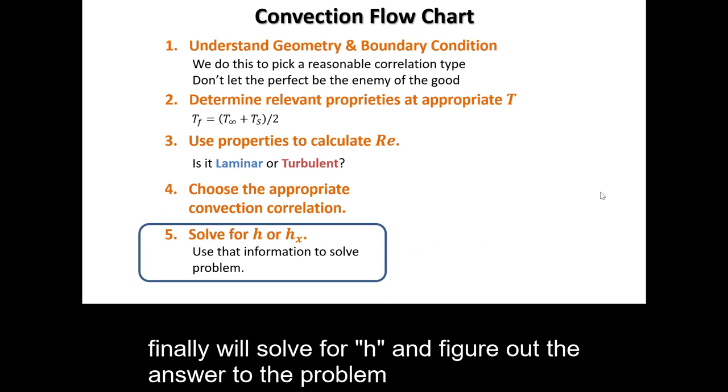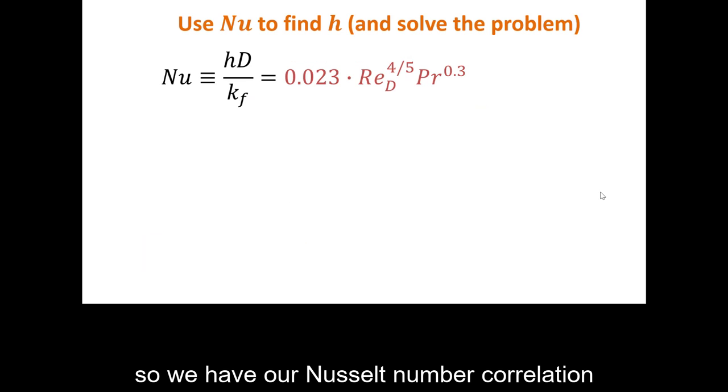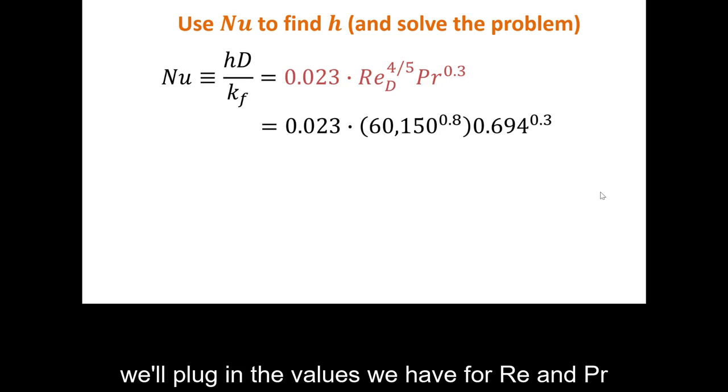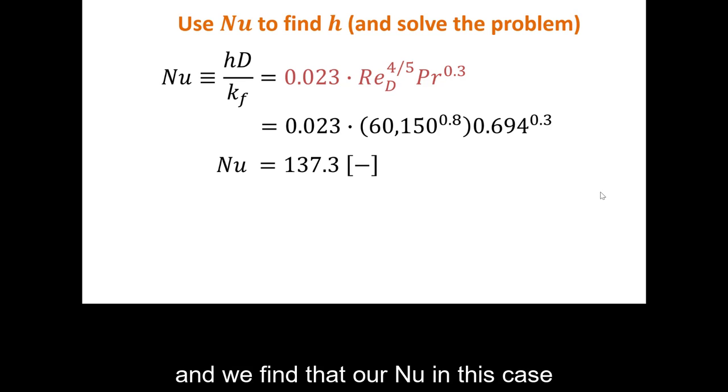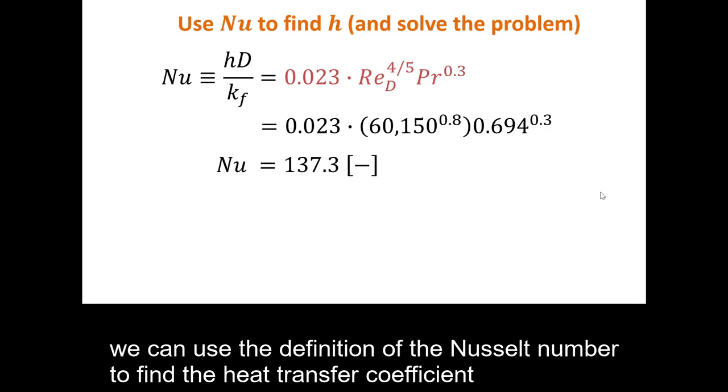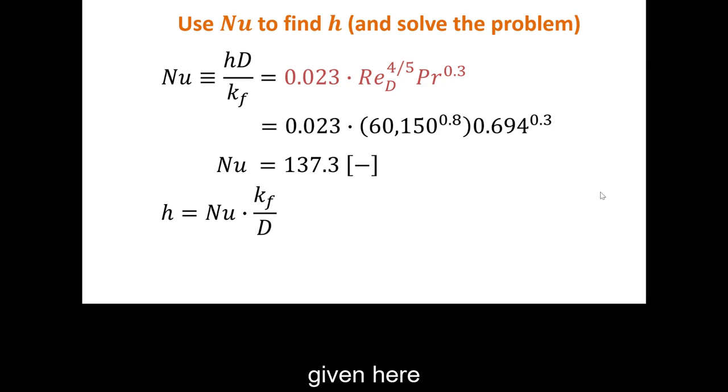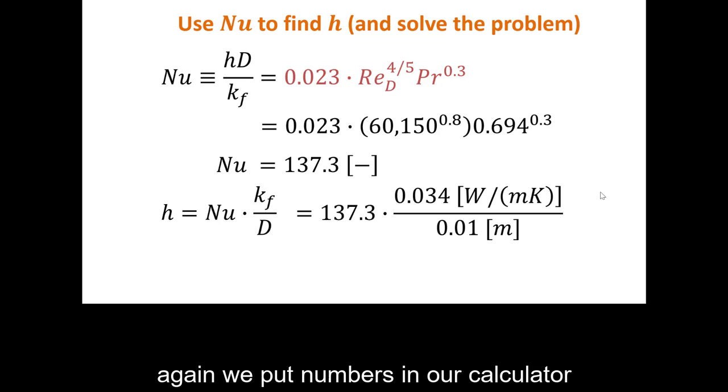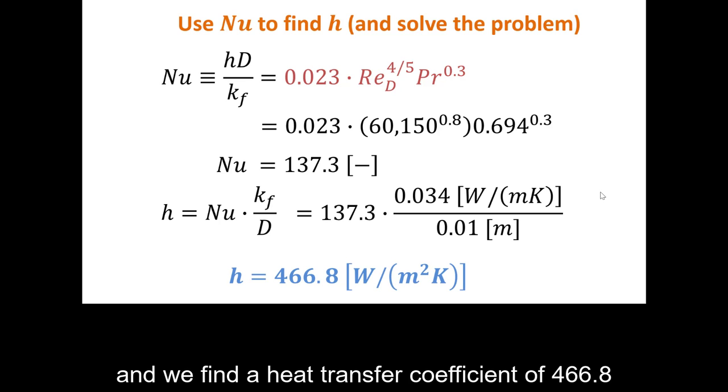Finally, we'll solve for h and figure out the answer to the problem. So we have our Nusselt number correlation. We'll plug in the values we have for Reynolds number and Prandtl number. And we find that our Nusselt number in this case is 137.3. We can use the definition of the Nusselt number to find the heat transfer coefficient given here. Again, we put numbers into our calculator and we find a heat transfer coefficient of 466.8 watts per meter squared Kelvin.